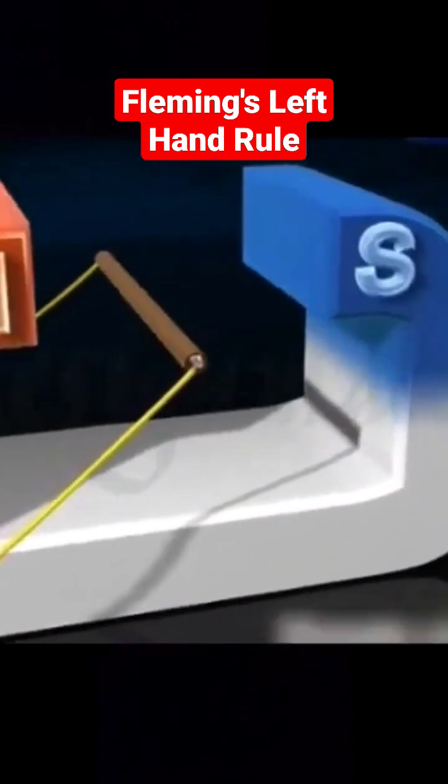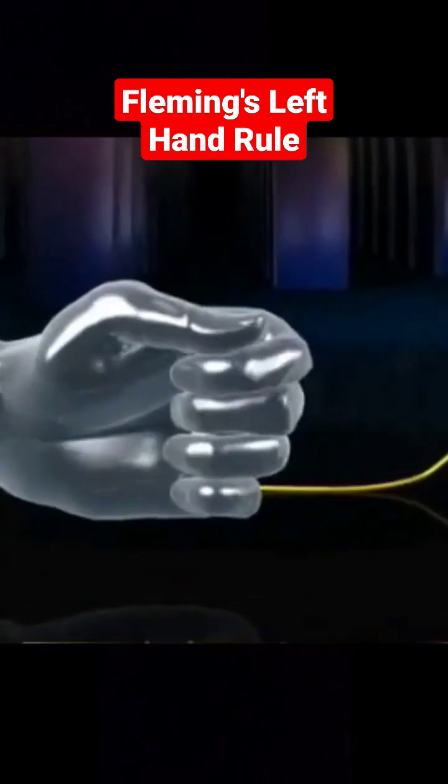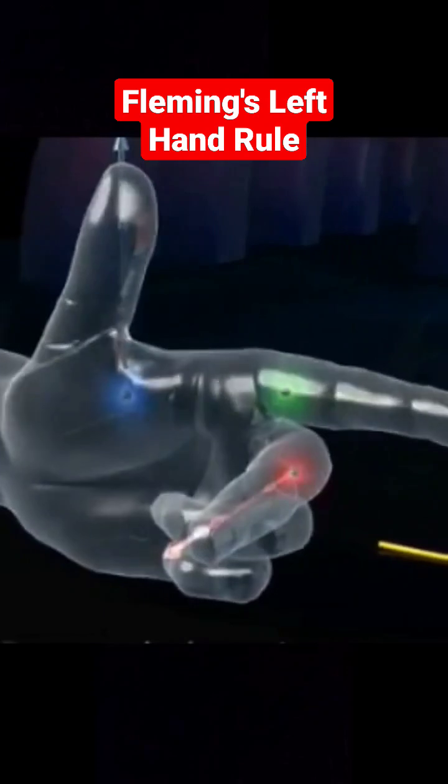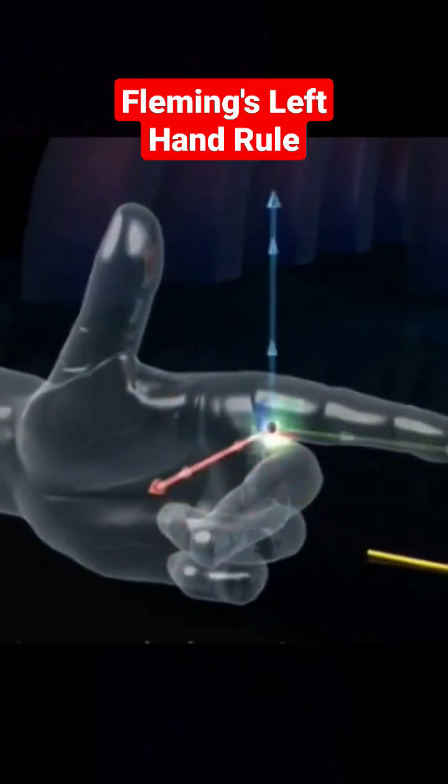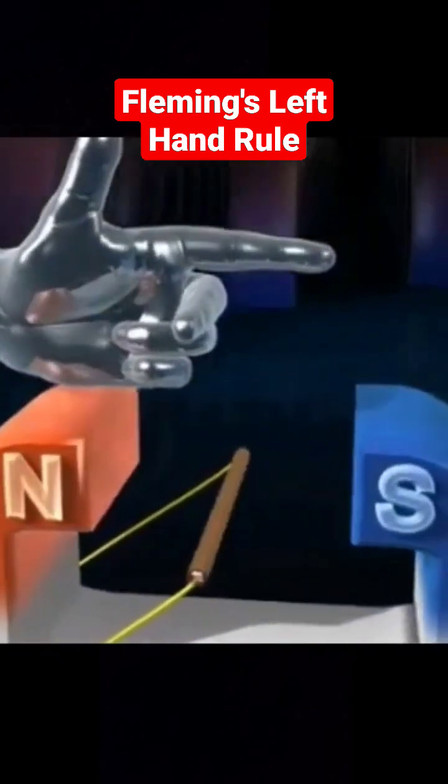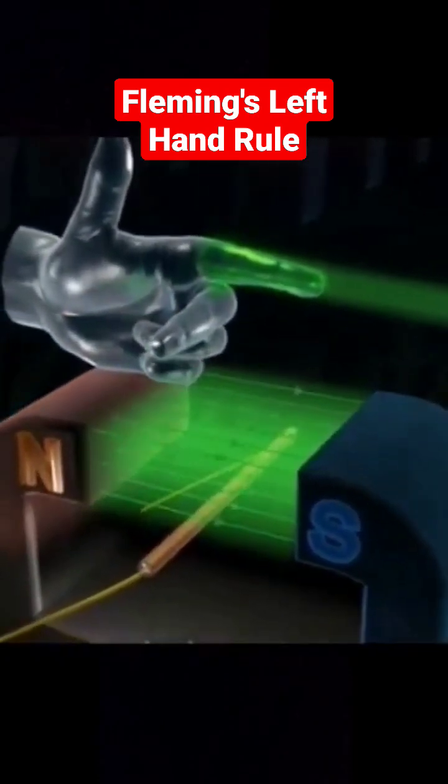Now let's understand this by taking a simple circuit. Arrange your left hand with thumb, first finger, and second finger all pointing at right angles to one another. Now point your first finger in the direction of the magnetic field. Point your second finger in the direction of current.